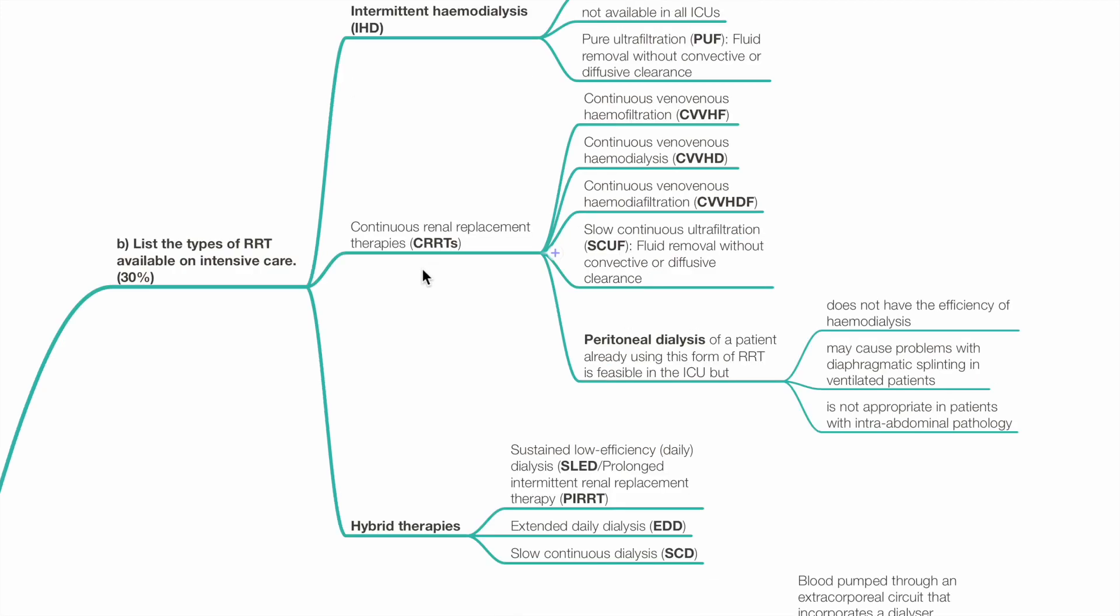Examples of CRRTs are CVVHF, CVVHD, CVVHDF, SCUF (slow continuous ultrafiltration), and peritoneal dialysis.